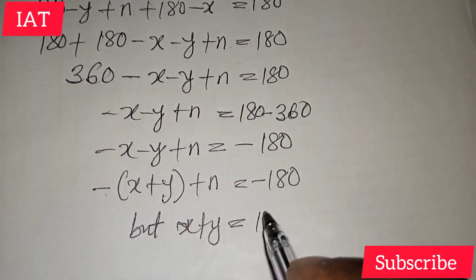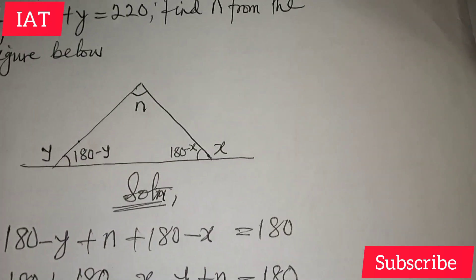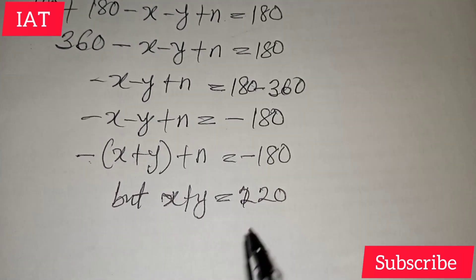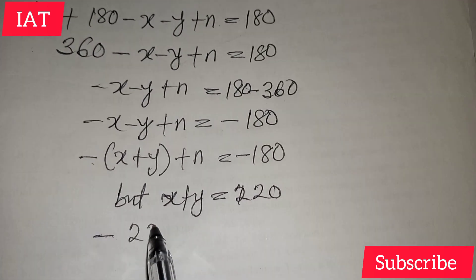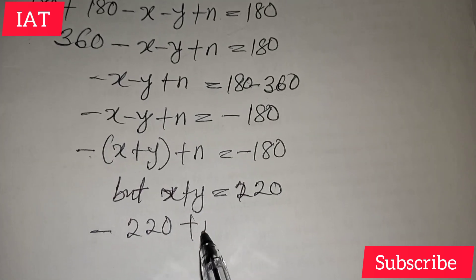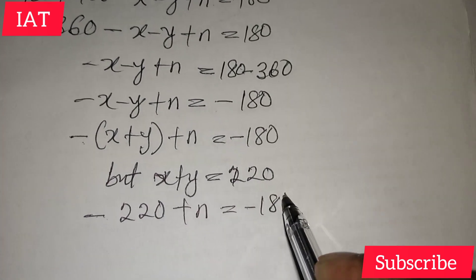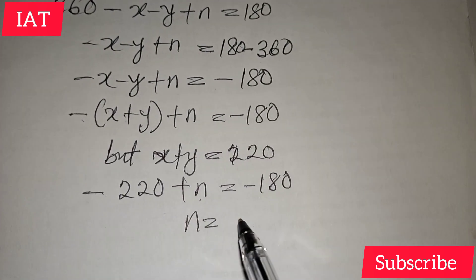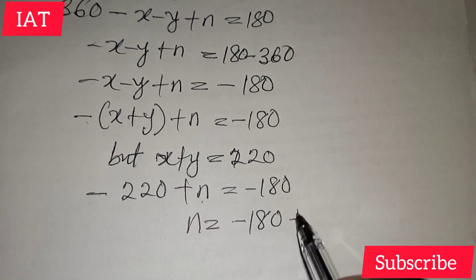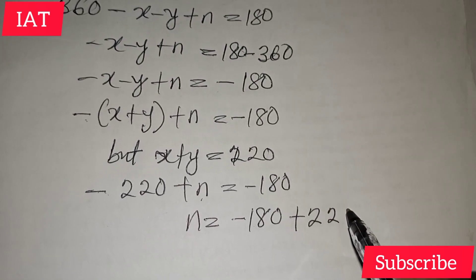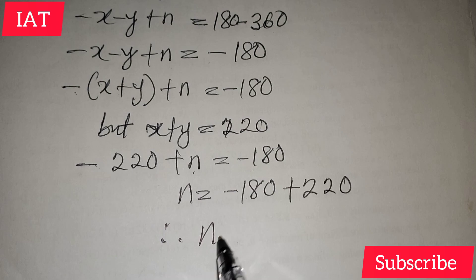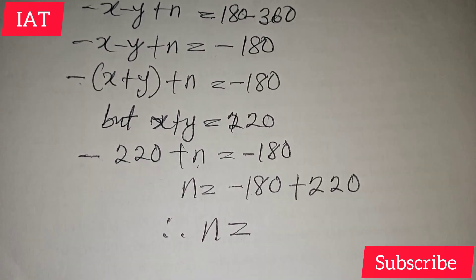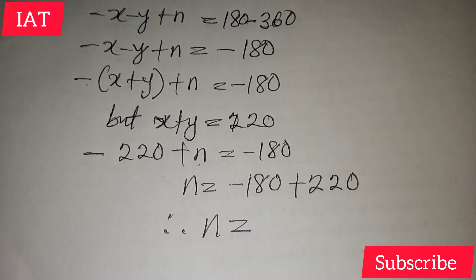In place of this x plus y, we just replace it with 220. So we have minus 220 plus n equal to minus 180. Now n will be equal to minus 180 plus 220. Therefore, n will be equal to 40.